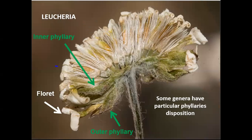The genus Leuceria has a particular phyllary disposition. You can see in the photograph the outer phyllary and the inner phyllary, with florets in the middle. These inner phyllaries can have their concave part oriented to the center of the capitulum, or to the outer part of the capitulum, or also oriented 90 degrees — making what is called a compartmentalization of the capitulum.